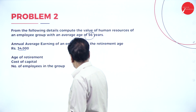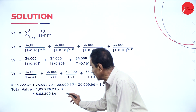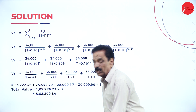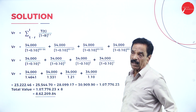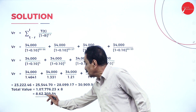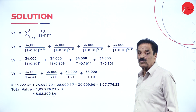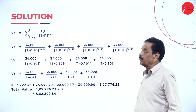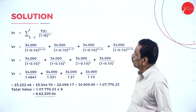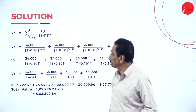There are 8 employees in this group. Multiplying the total individual value by 8, you get the total value of the 8 employees, which works out to 8,62,209.